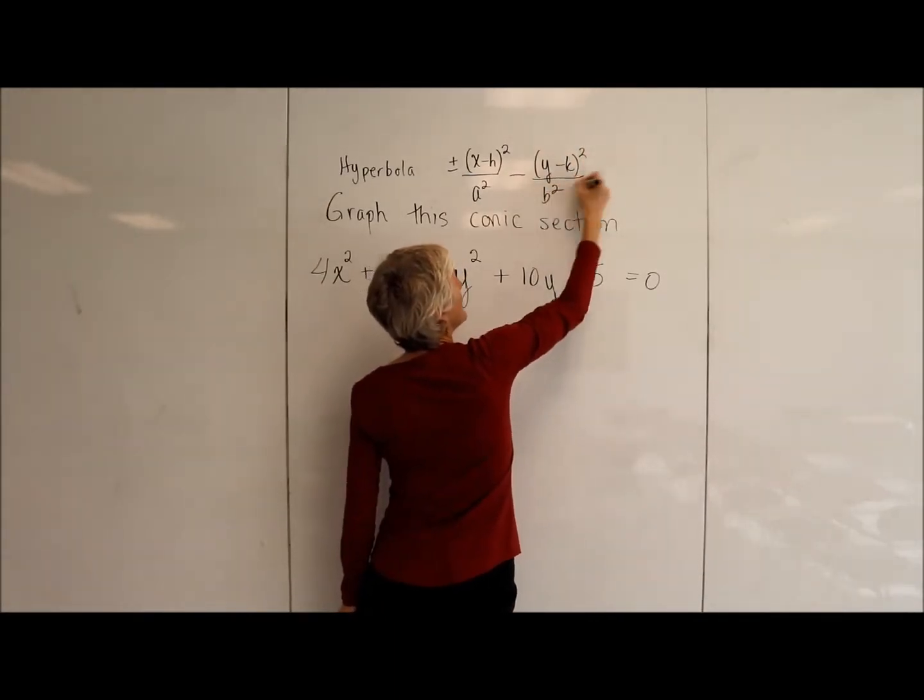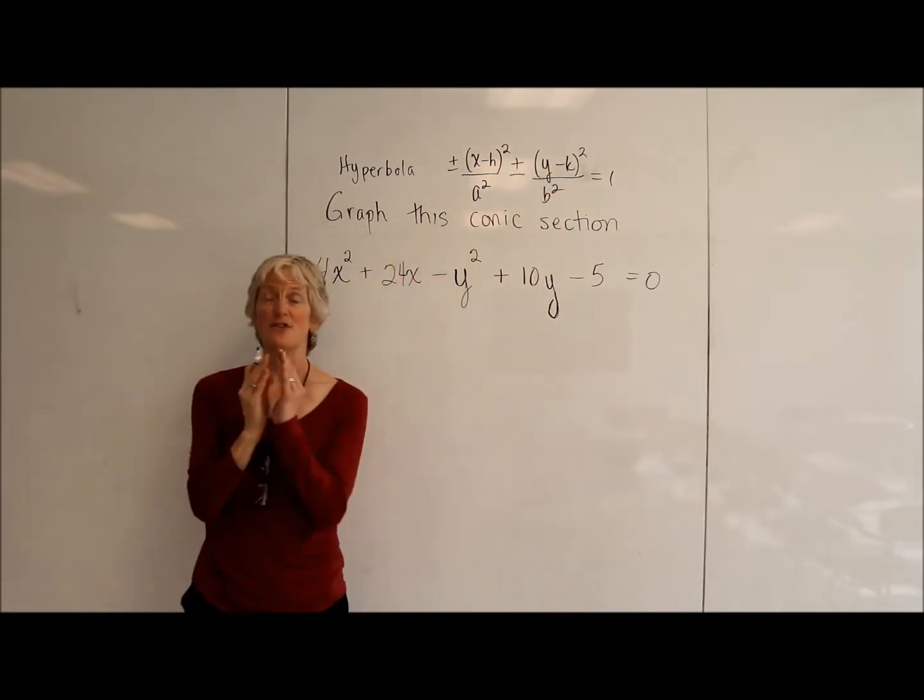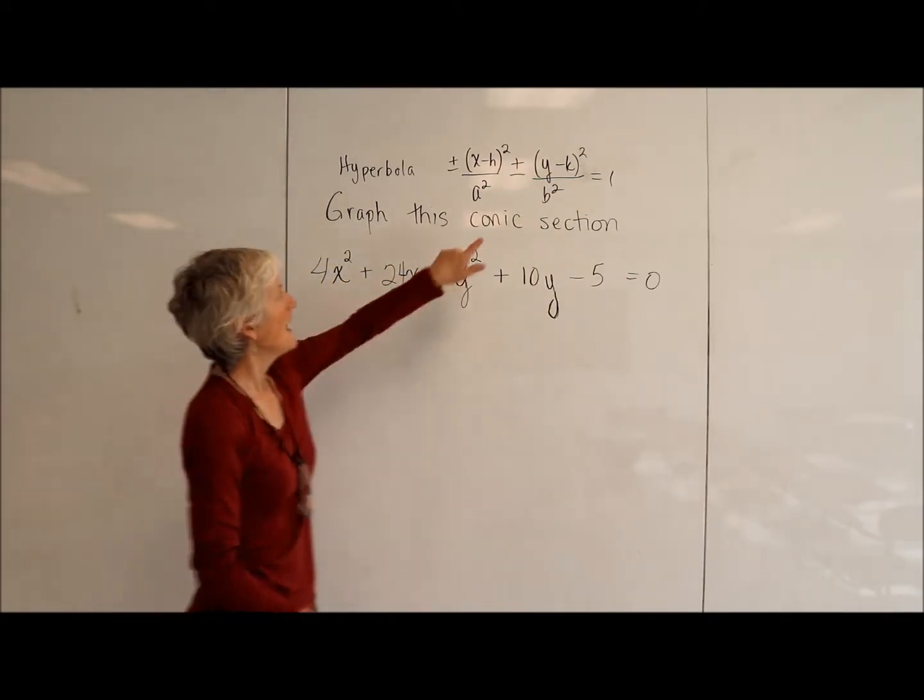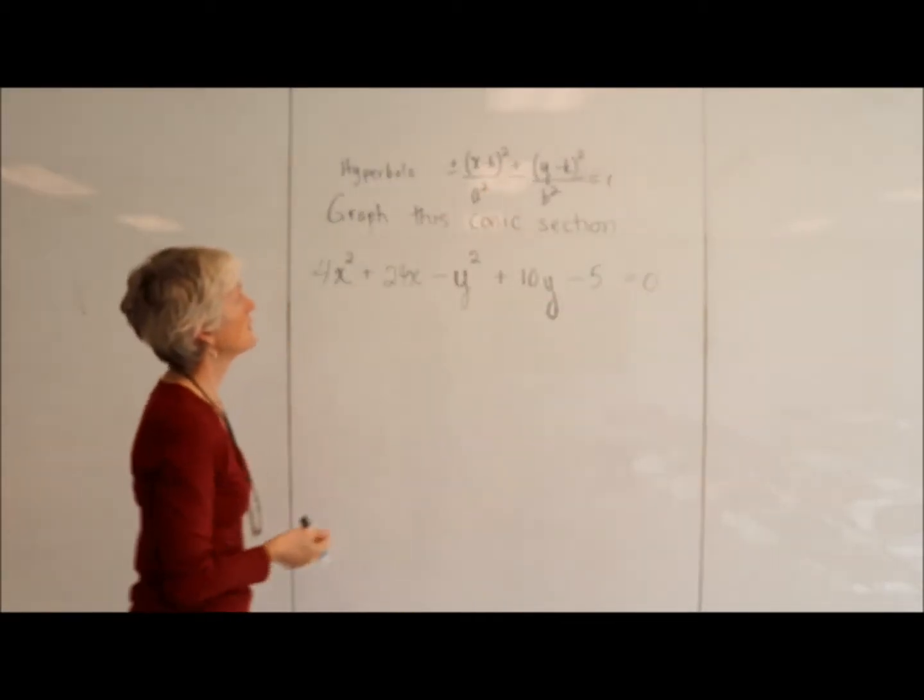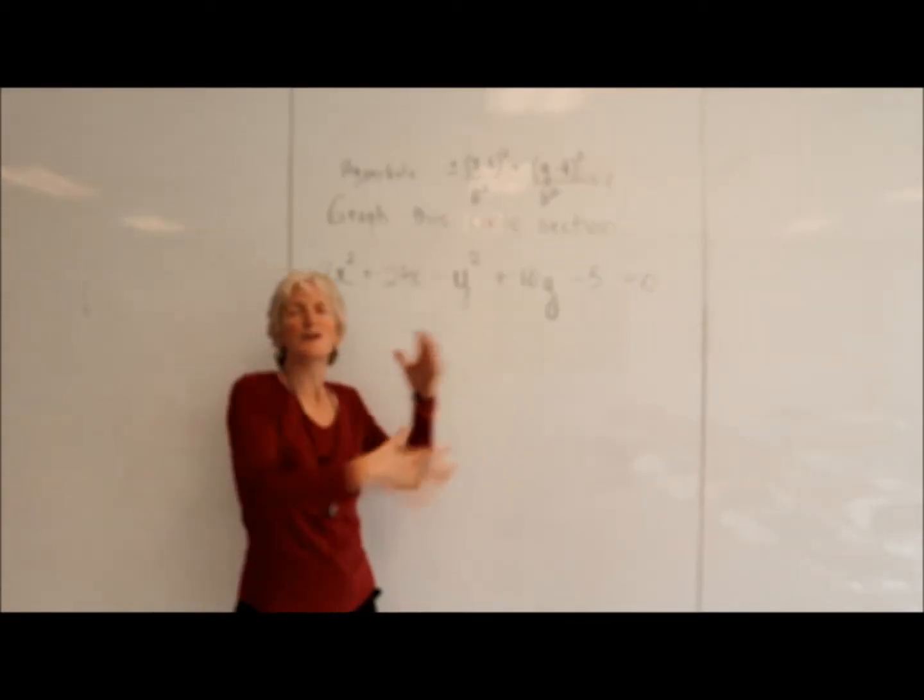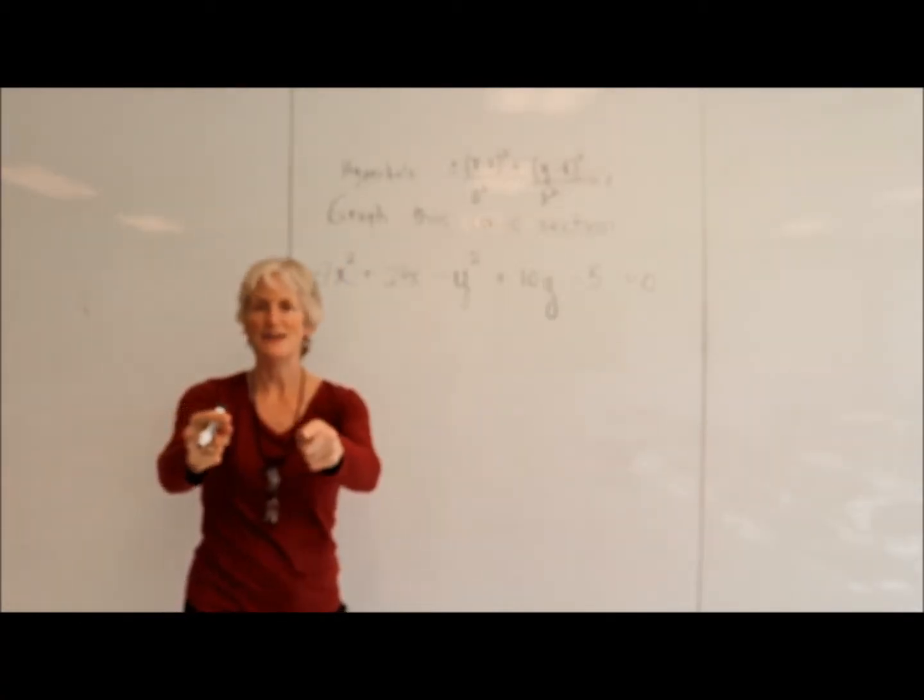Where (h,k) is the center of the hyperbola, and the a and b tell us about the slant asymptotes. So we've explored all this and discovered this in class. This is just going to be a how to do this. Are we ready?